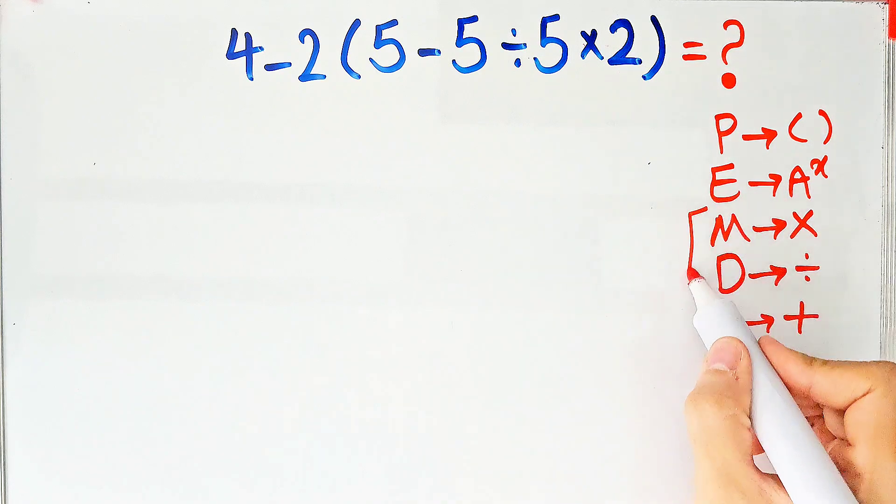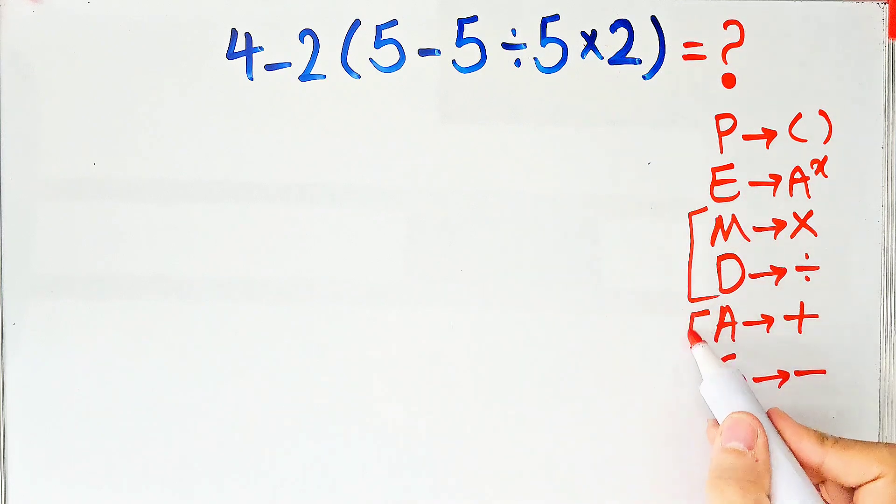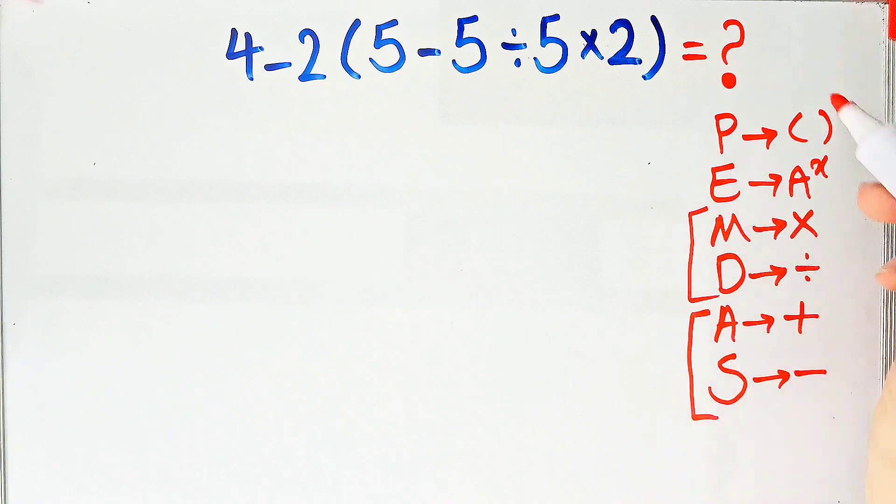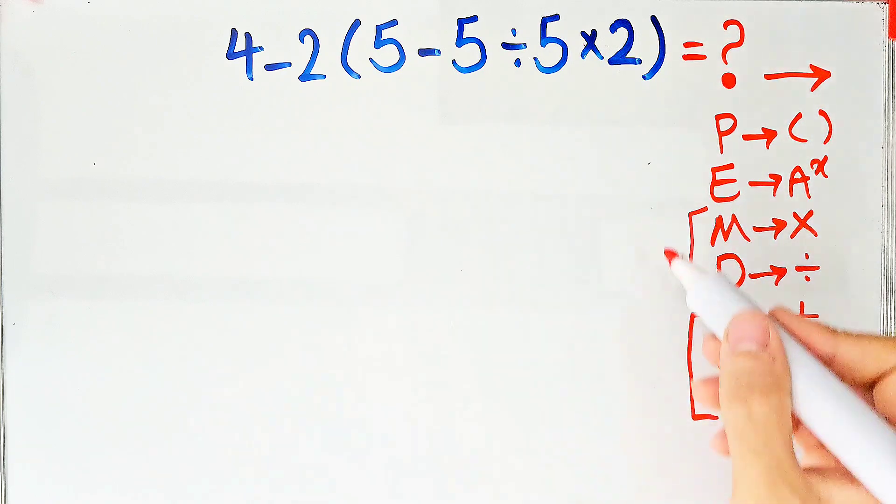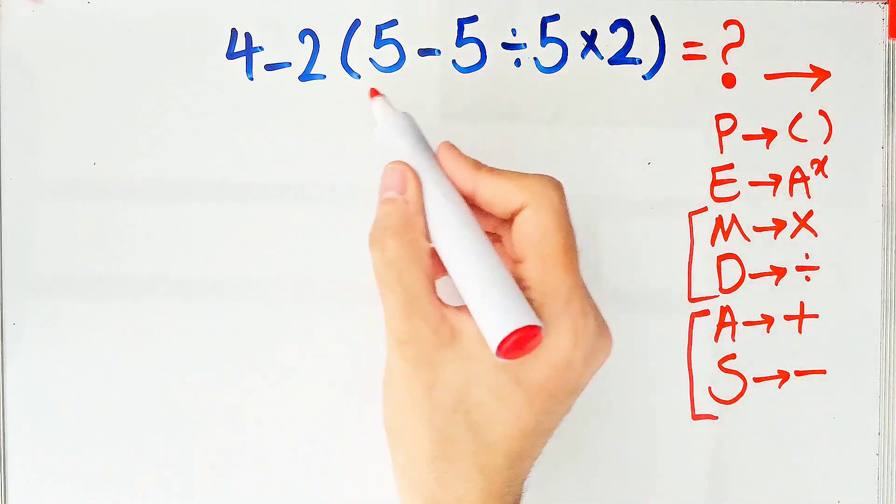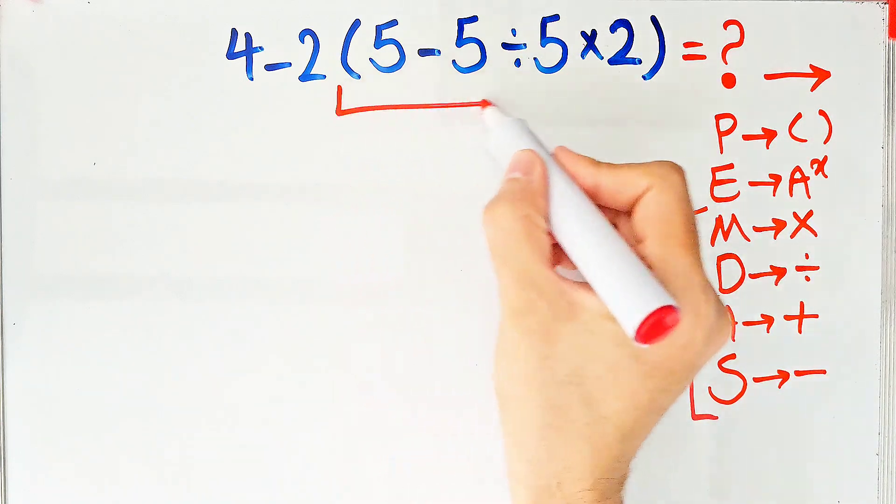Multiplication and division have the same level of priority. Also, addition and subtraction have the same level of priority. When we have both in an expression, we start from the left and simplify the question. According to the PEMDAS rule, first we simplify the parenthesis. We have subtraction, division, and multiplication.